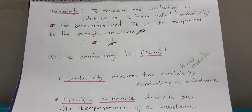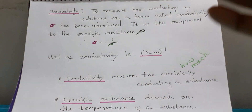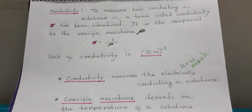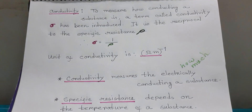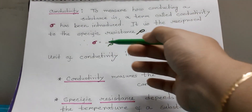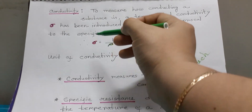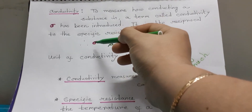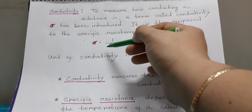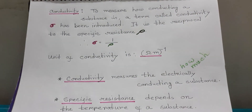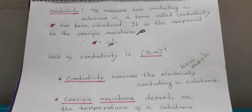If temperature goes up, then an object shows a different resistance value. And if the temperature is low, the substance shows another value. The main thing is conductivity, which is expressed by the symbol mho — that is one divided by rho, which is specific resistance.